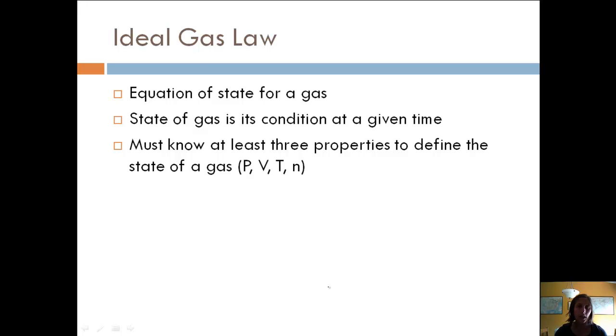In order to solve the ideal gas law, we have to know at least three of the properties. There are four variables present in the ideal gas law: pressure, volume, temperature, number of moles. We need to know three of them in order to define the state of the gas, because then we can solve for the fourth one.